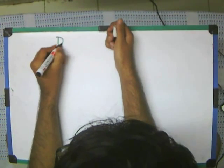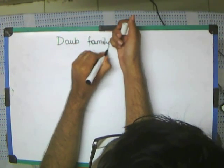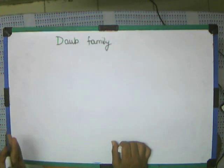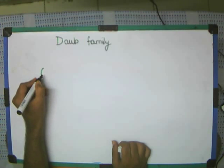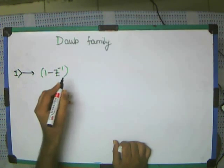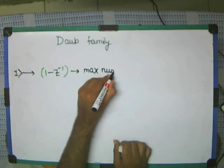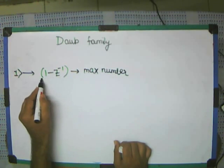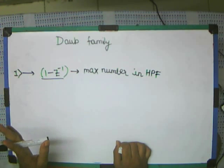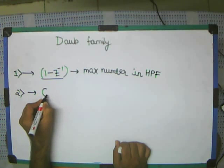Now we finally get into the first DOP family. In the DOP family, the important thing is that we build upon the concept based on the heart — that 1-z inverse, the effect of 1-z inverse comes into picture. This is the first point. We try to use the maximum number of 1-z inverse in the high-pass type. This is the first condition.